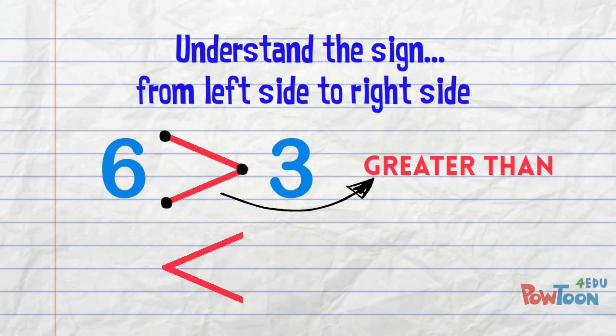On the left, there's 1 point. And on the right, there are 2 points. 1 is less than 2. This is the less than sign.